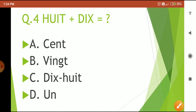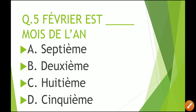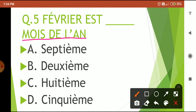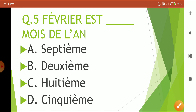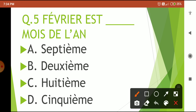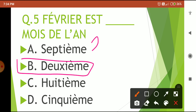Fifth question: 'Février est le — mois de l'an', meaning February is the dash month of the year. As you all know, January is the first month and February is the second month. Your options are: septième, deuxième, troisième, and cinquième. Your 5-second countdown begins now. Time is over — the correct answer is 'deuxième' because February is the second month of the year.